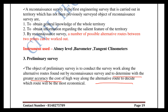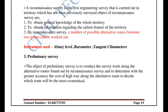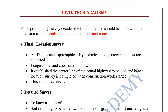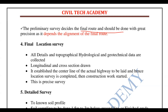In the preliminary survey, we conduct soil survey, material survey, traffic survey, and fix the center line. The final route is determined depending upon the alignment. The preliminary survey finalizes the alignment, and the final location becomes clear.